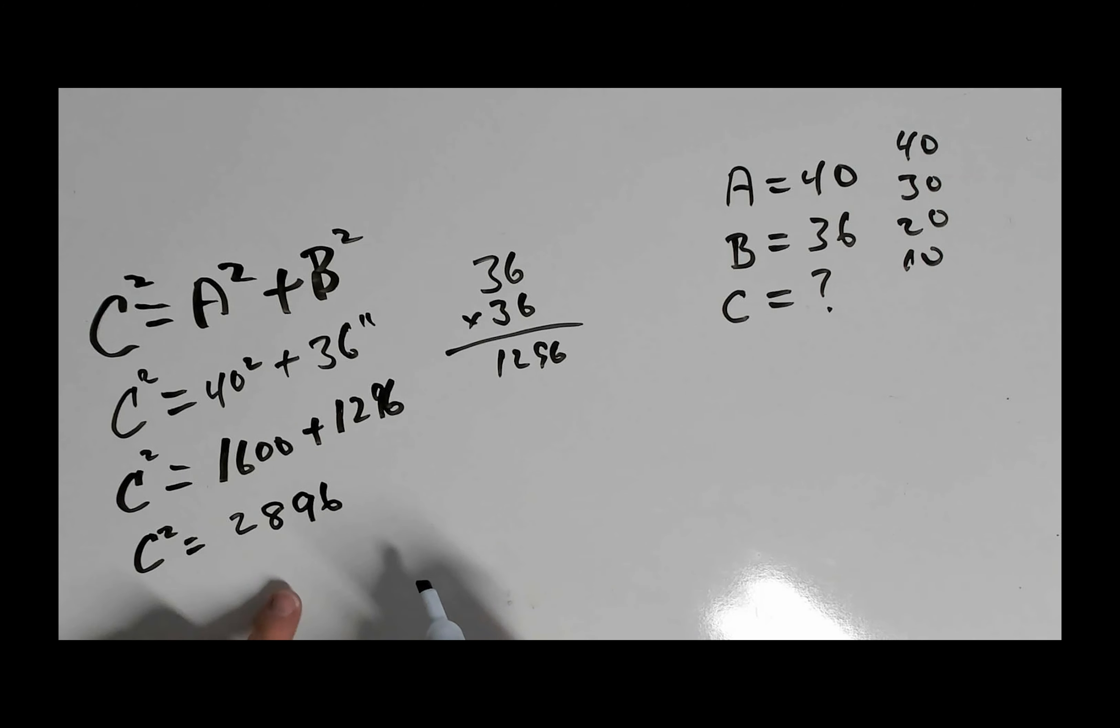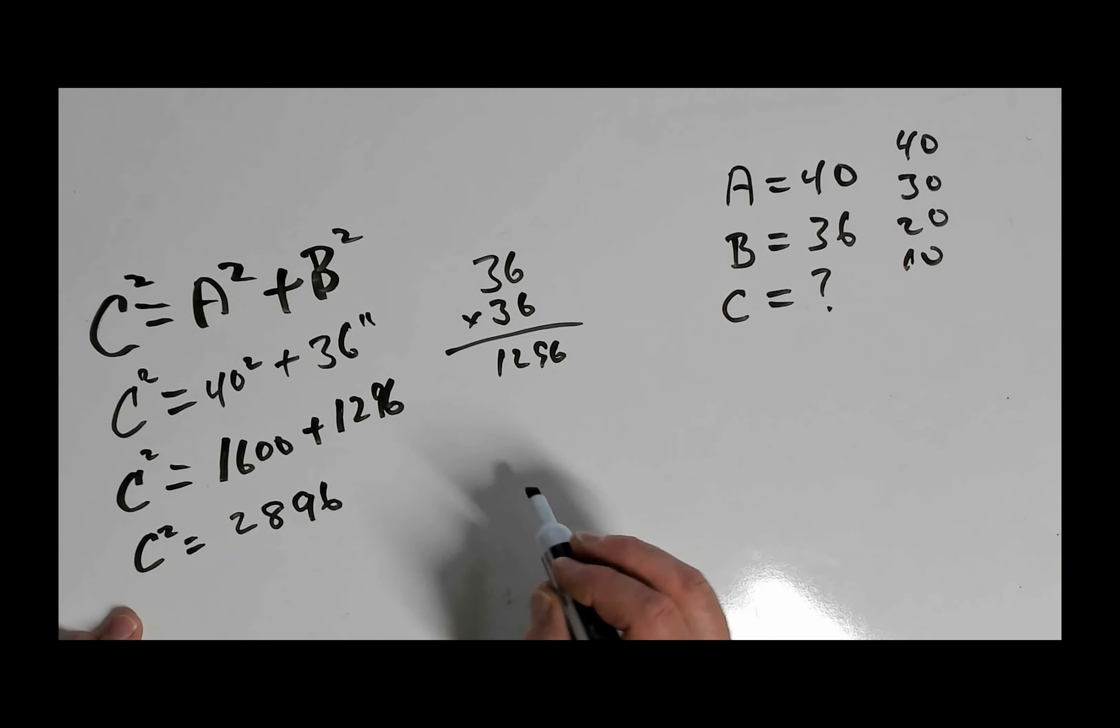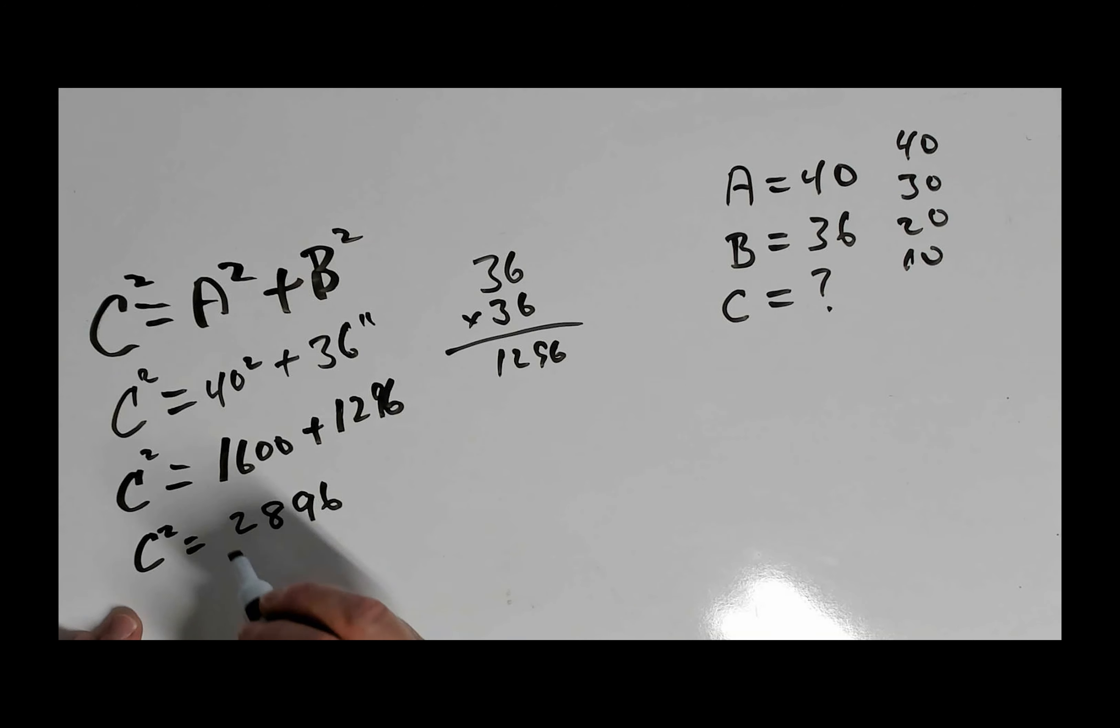So what we need to do is solve for C squared here. So let me go ahead and kind of clean my board off. So C squared. So what I have to do is find out what the square root of 2,896 is, and that'll be our C.